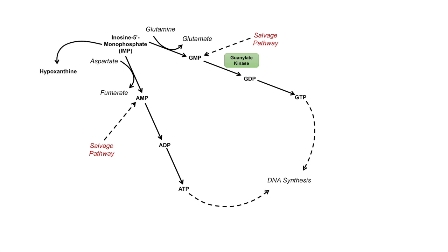Inosine 5'-monophosphate can actually be metabolized into something known as hypoxanthine. Hypoxanthine, by a couple of steps utilizing the enzyme xanthine oxidase, can be metabolized into uric acid. That is very important in human health, which we'll talk about in another video.